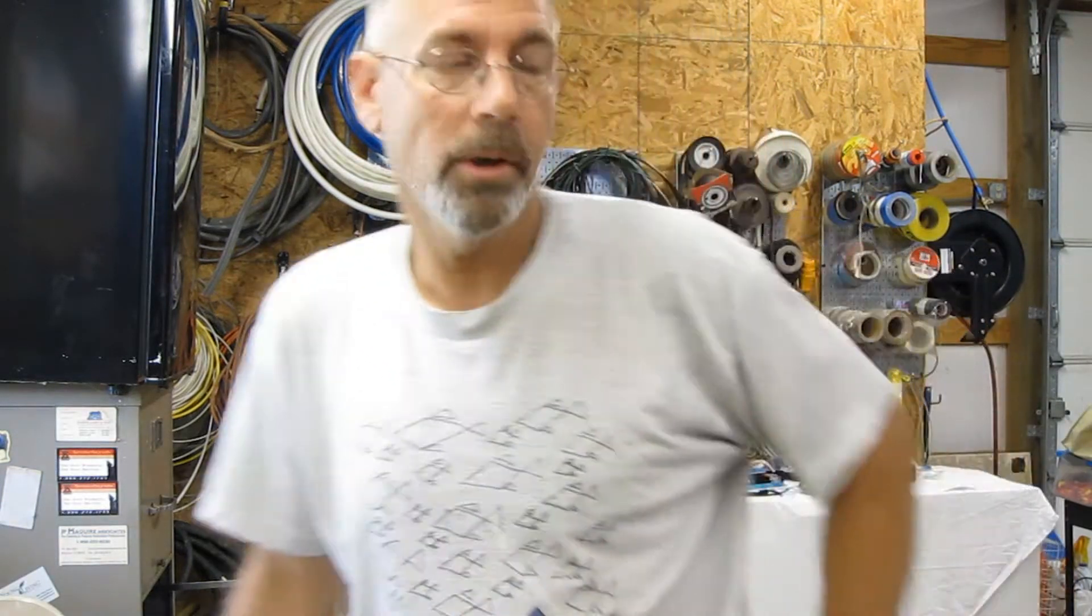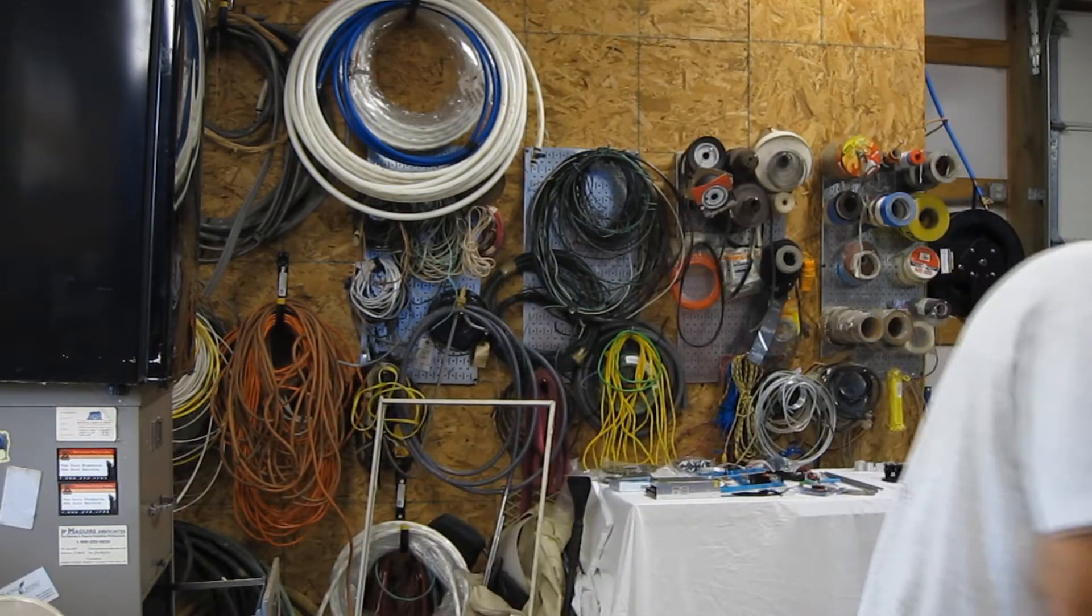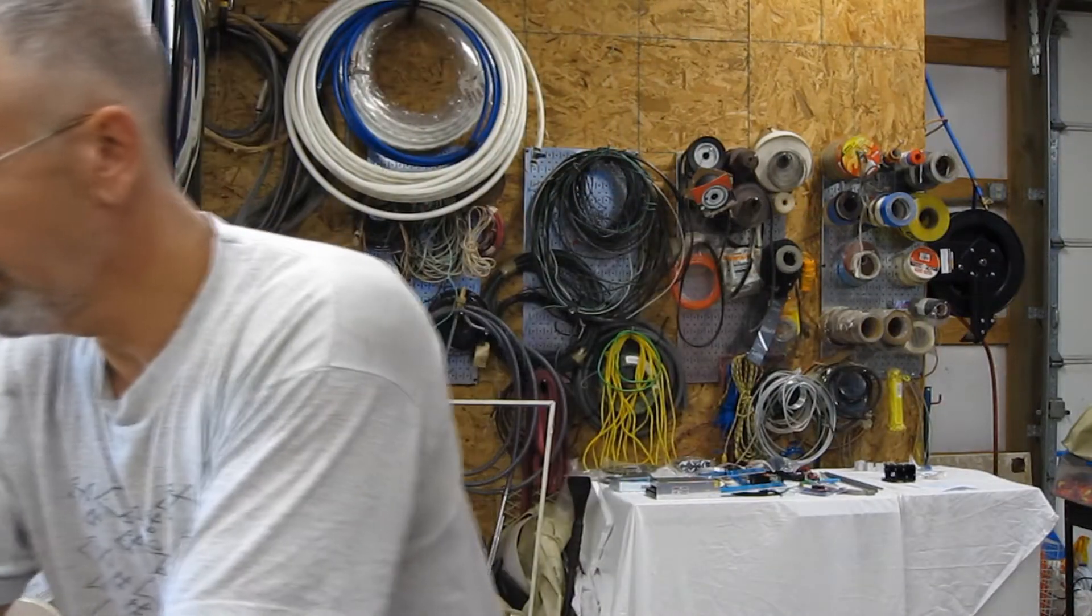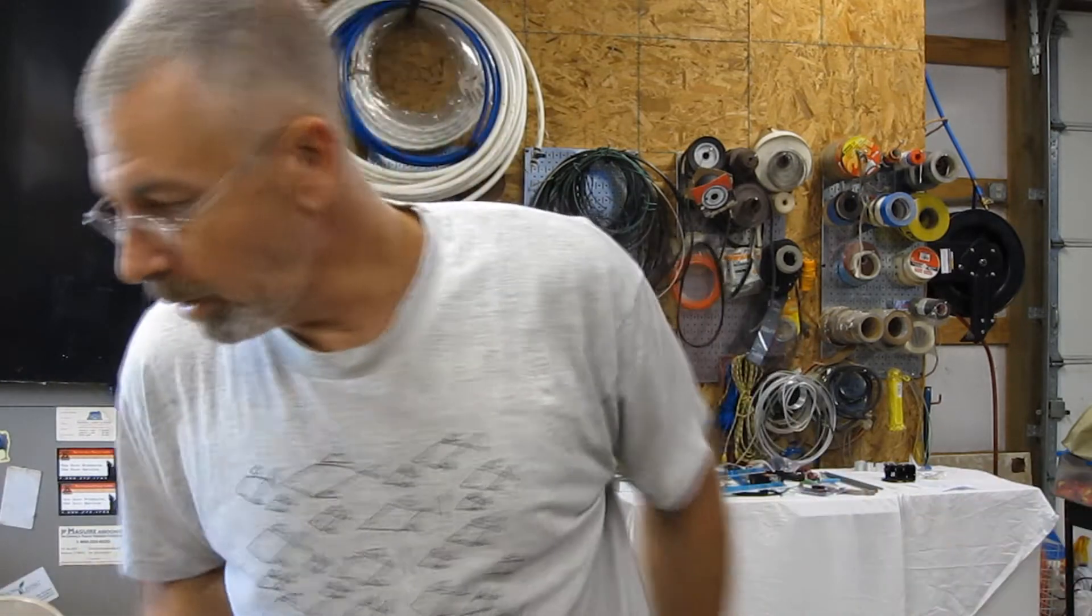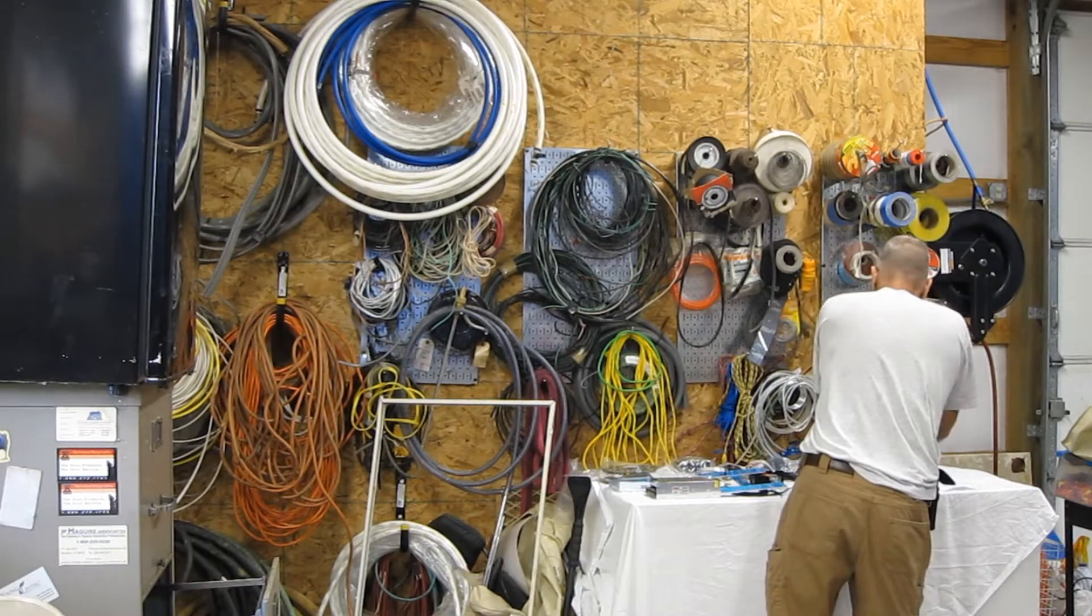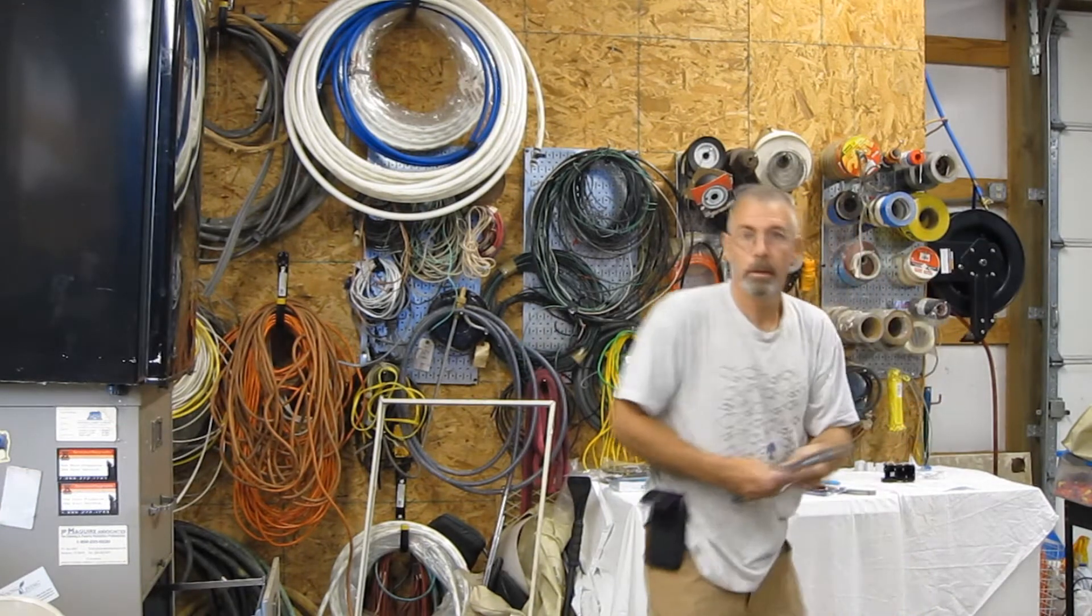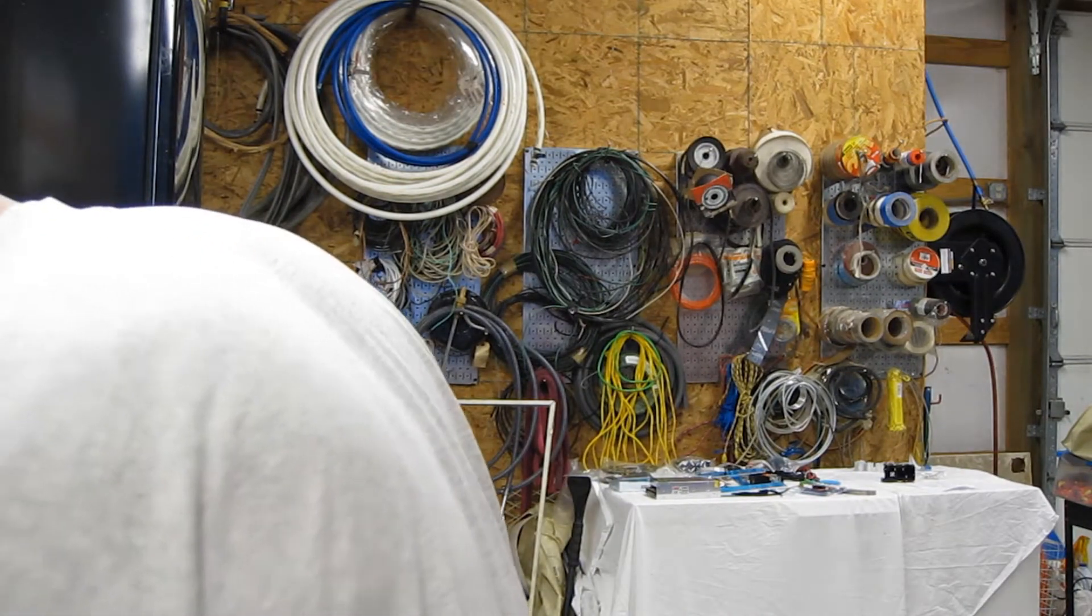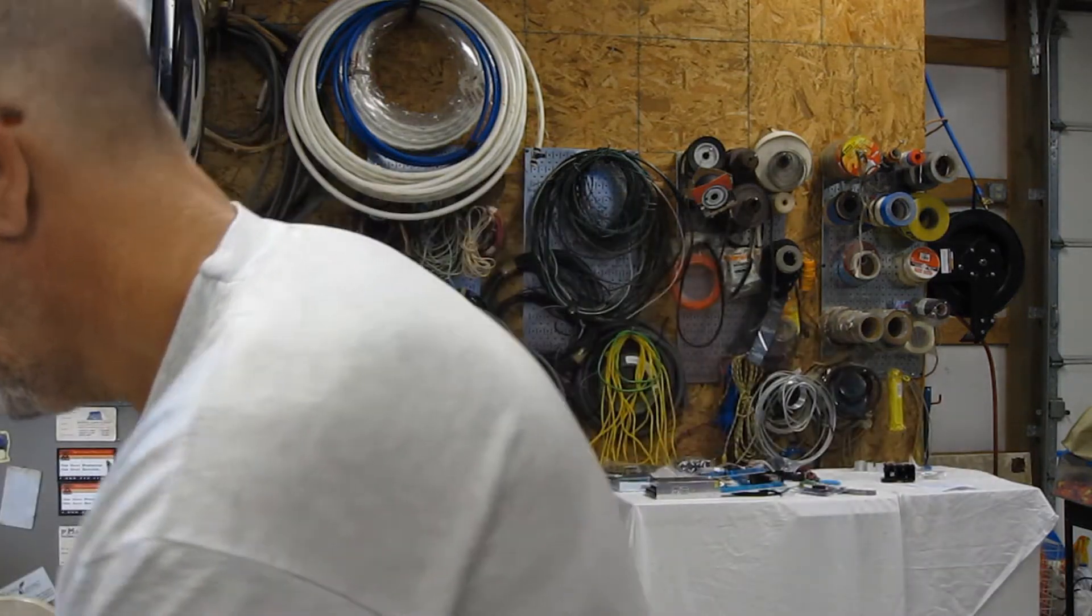Alright, so right now we're at the point of the build where we got to check the rods and the lead screws for straightness. This is critical to the overall effectiveness of this machine. I don't have a piece of glass, but I got this countertop. I'll see any wobble if there's anything crazy excessive here. We're going to try to straighten them out if it's even possible.